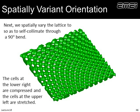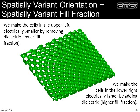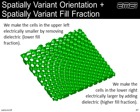To fix this: compressed unit cells on the inside of the bend have become smaller, so we can make them electrically larger by increasing the fill fraction. Stretched unit cells on the outside have become physically larger, so we lower the fill fraction to make them electrically smaller. Now, in addition to spatially variant orientation, we've built in a spatially variant fill fraction that retunes the lattice so it's all self-collimating at the same frequency. The ability to spatially vary multiple things can be very important.